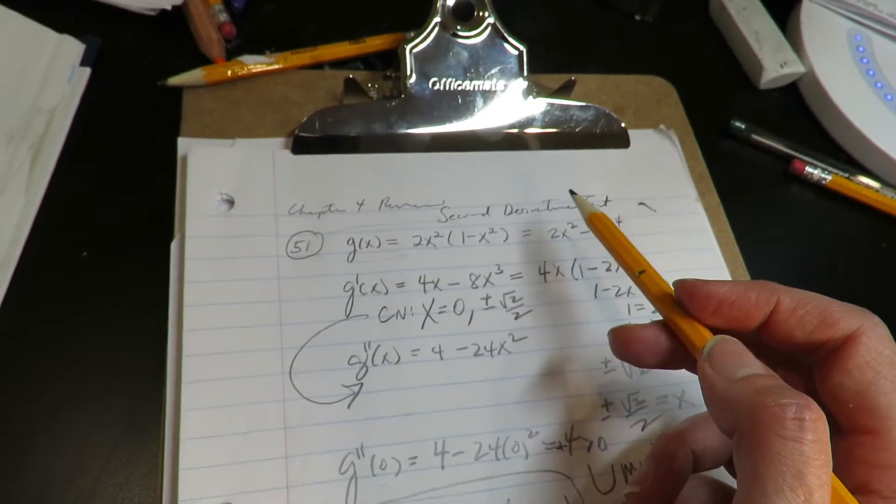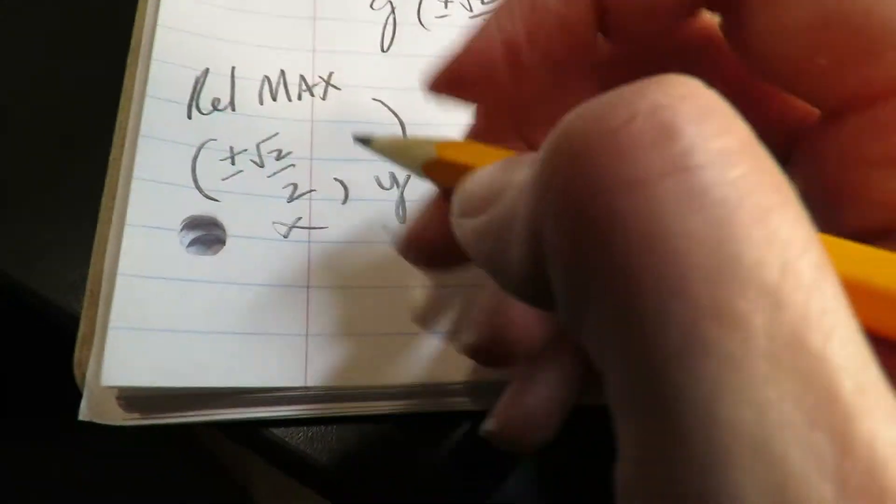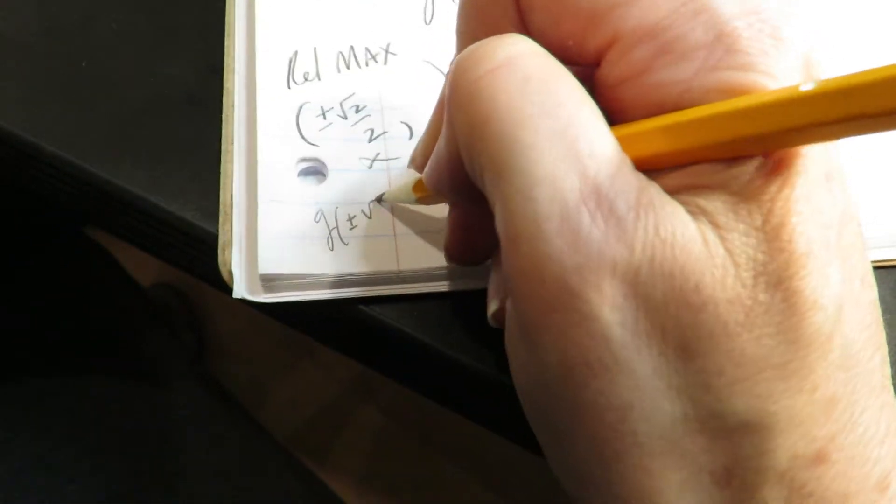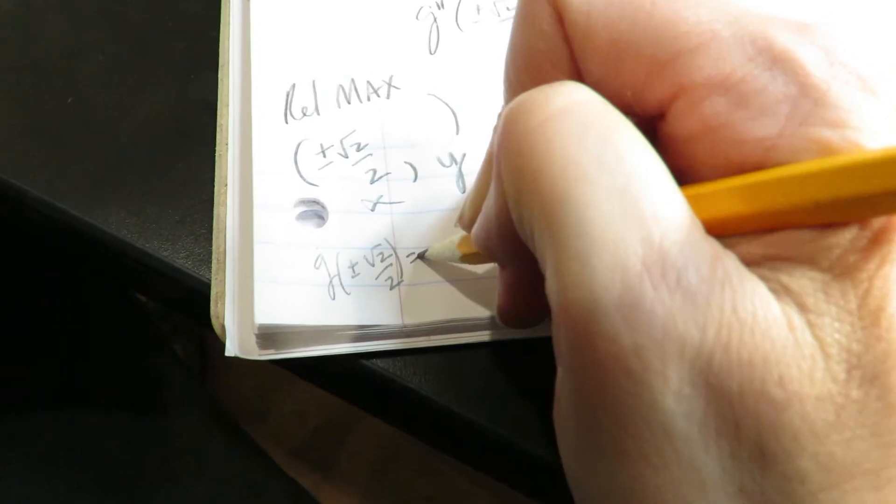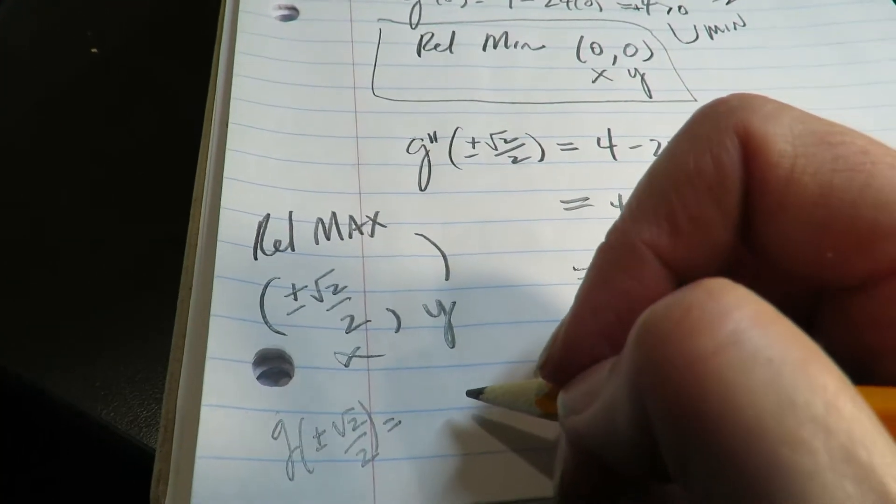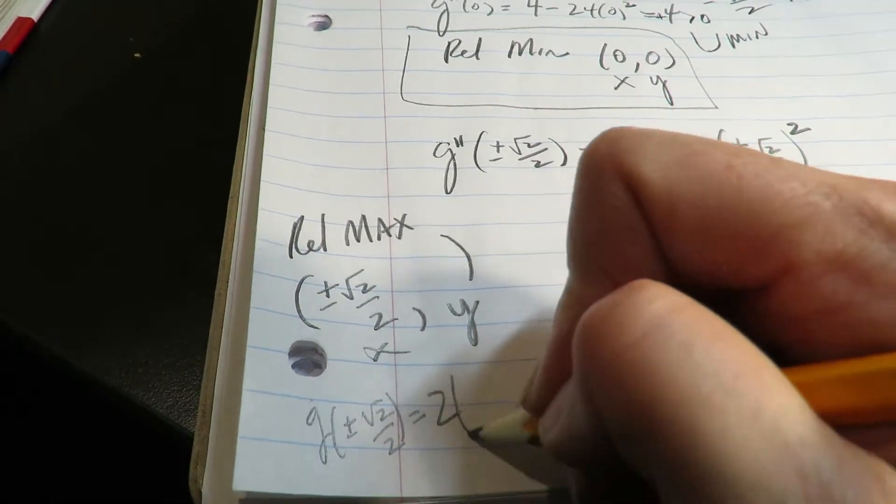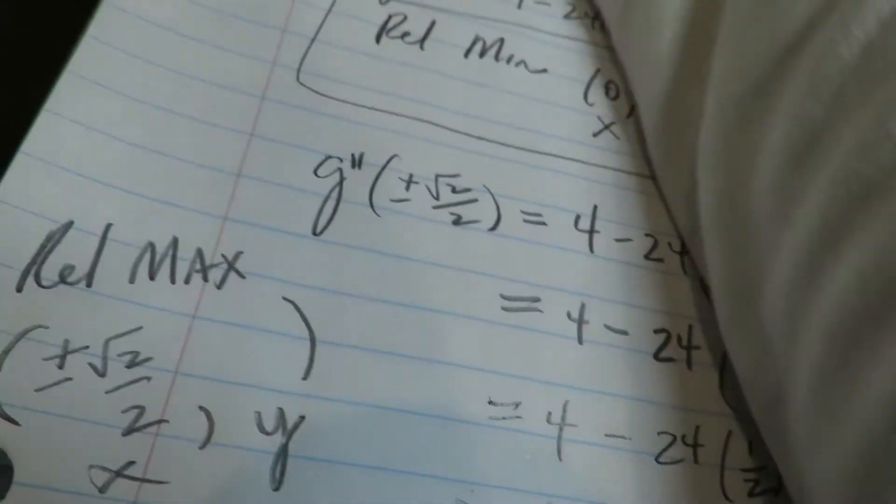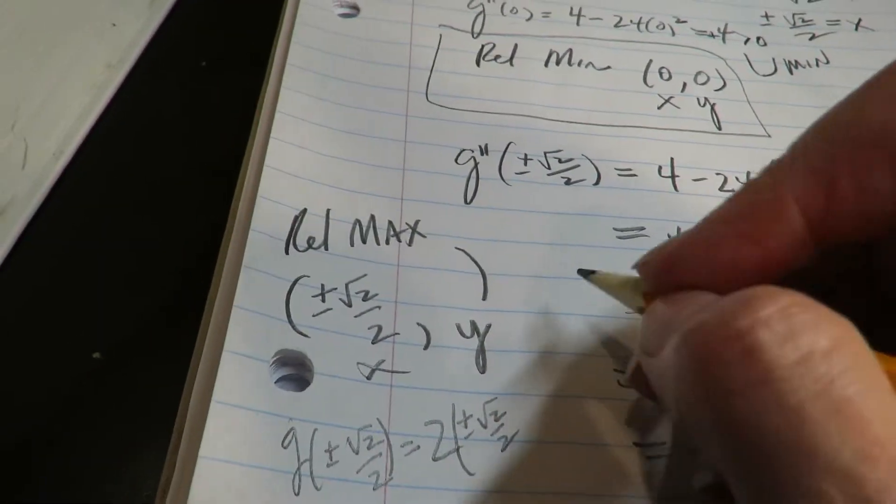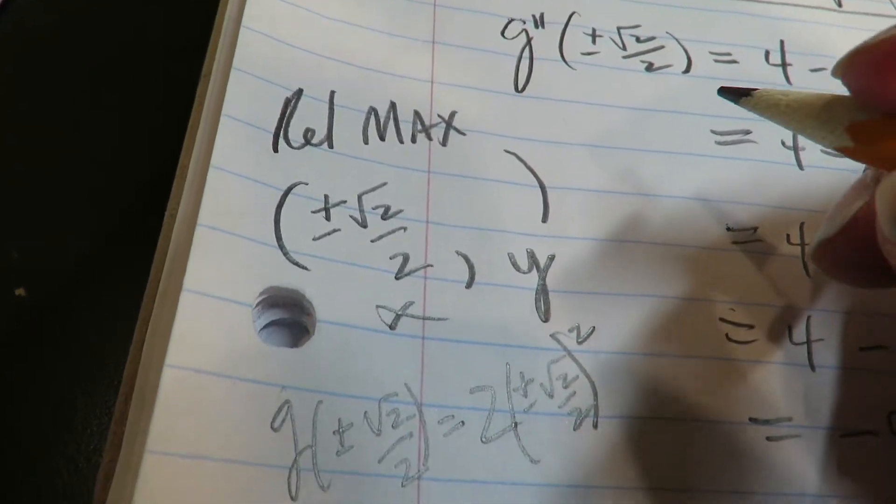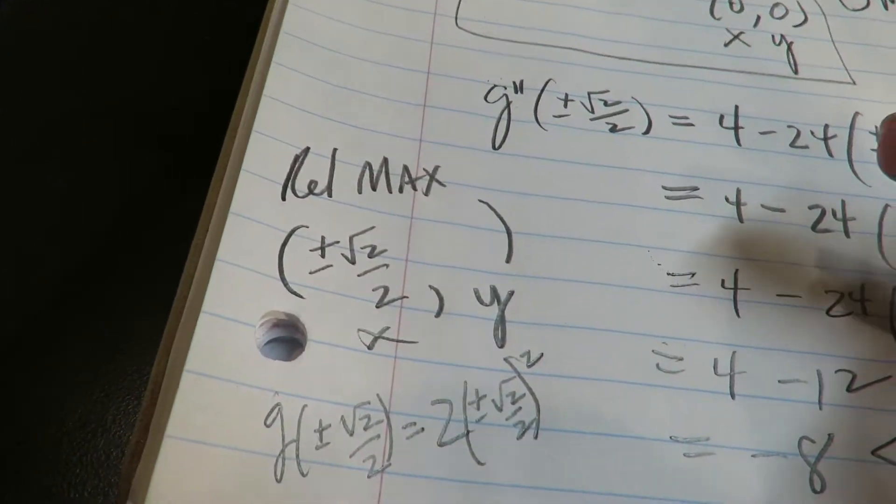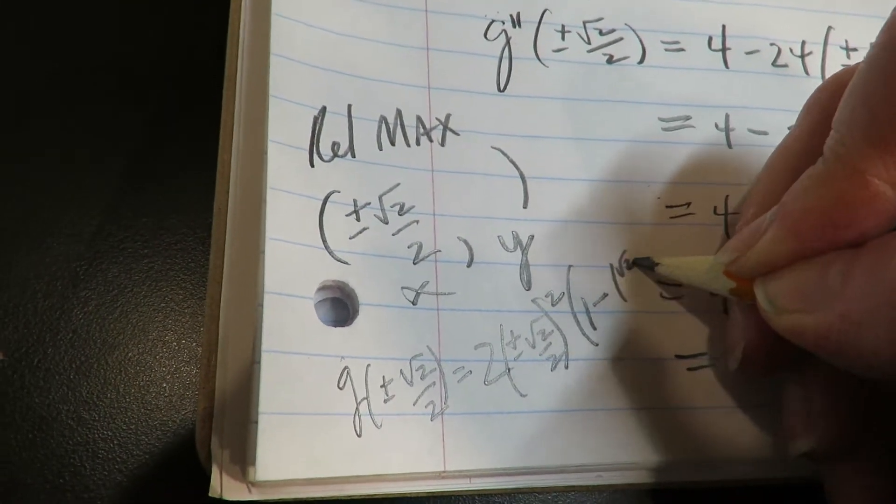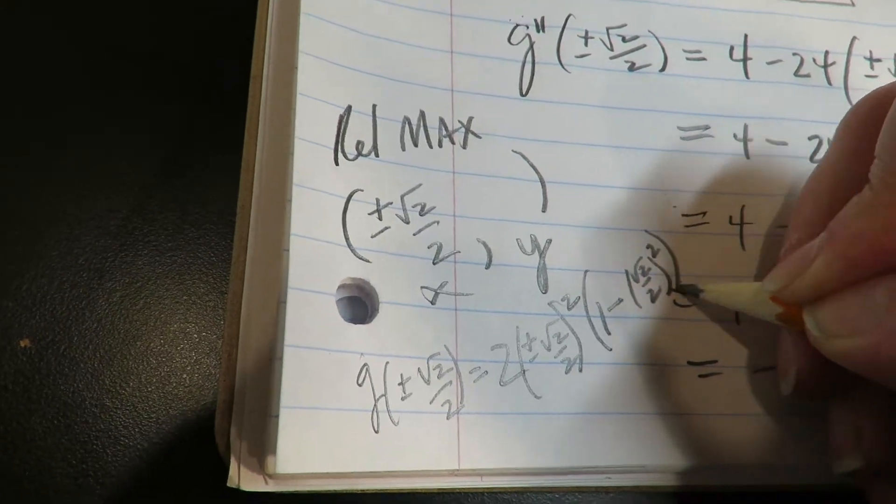we'll just go ahead and plug it in. Let me just see if I can squeeze. So I'm plugging it in here. Okay, so g(±√2/2) equals 2... Let's see here. So two times (±√2/2)² times (1 - √2/2)². Oh, this might be too squished.